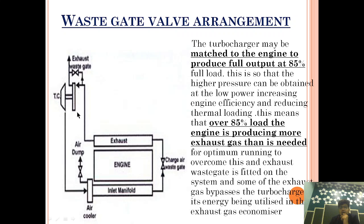Now if the engine is run at 100% load, the turbocharger can't produce more than its maximum, so that energy will go to waste. For that reason, to prevent wastage, a bypass arrangement is provided by which the exhaust can be bypassed to the uptake, where it can be used by the economizer. At 85% engine load the turbocharger is operating at maximum efficiency.